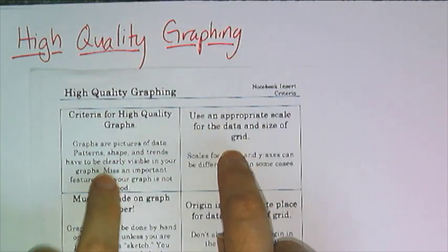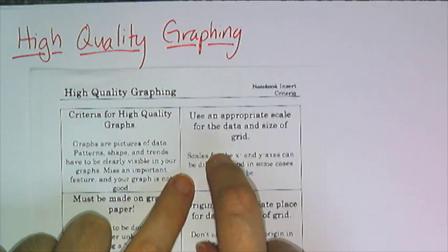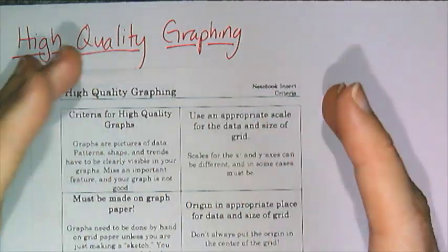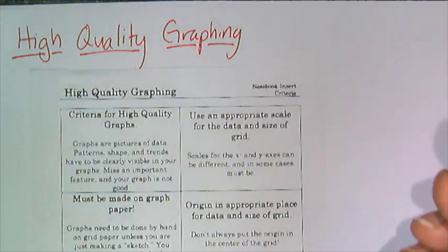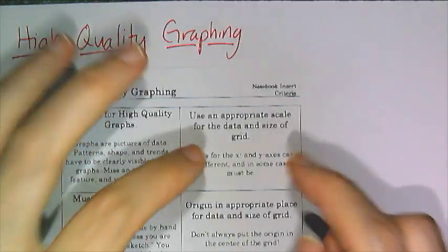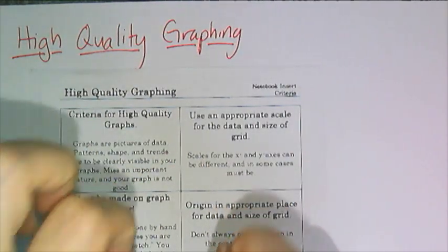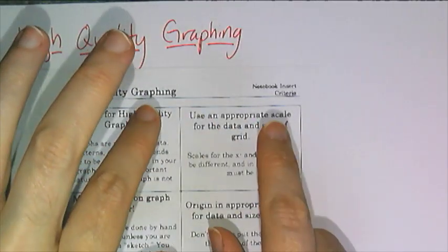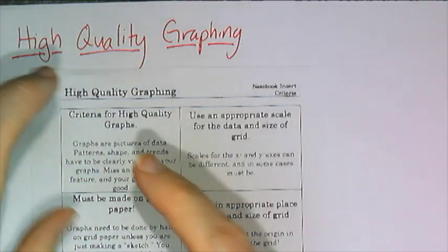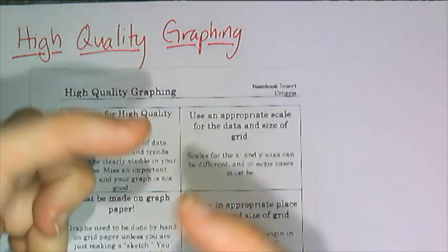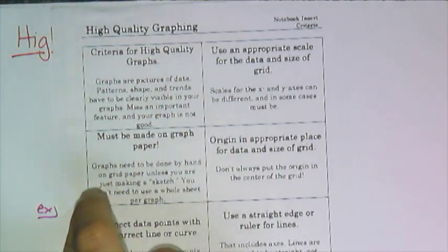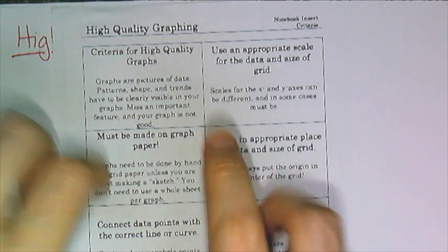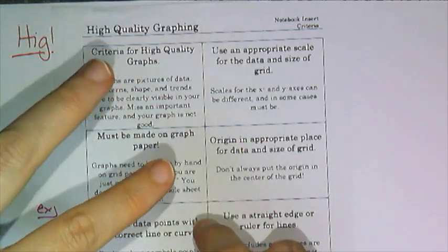You have to use an appropriate scale for the data and the size of the grid. You don't have to actually use an entire sheet of graph paper for one graph — I actually discourage you from doing that because there's no point unless you are physically going to be working with the graph. If you graph data points to figure out trends in the data, then yes, you want a big graph to work with. But if we're just looking for the shape and the patterns that emerge from the graph, you can make a graph this big. It has to be on graph paper — don't try to draw in horizontal and vertical lines on a piece of paper or get lined paper and make vertical lines on it. It needs to be on proper graph paper, and we have plenty of graph paper in class.